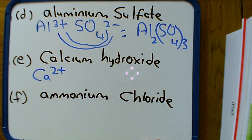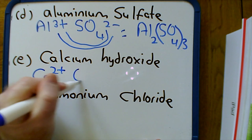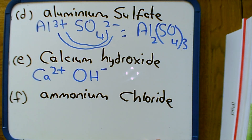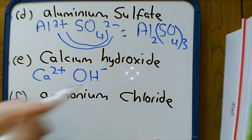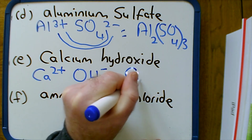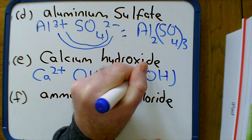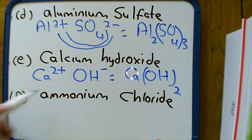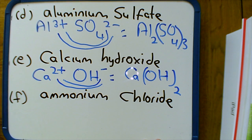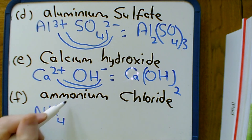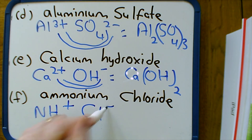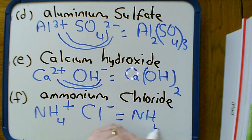For question E, calcium hydroxide: calcium is Ca2+ and the hydroxide ion is OH−. We need two OH− to cancel each calcium, so the formula is Ca(OH)2. The brackets are important because we have two OHs for every calcium. For question F, ammonium chloride: the ammonium ion is NH4+ and the chloride ion is Cl−. The same unit of charge on each — this simply cancels out — and the formula is NH4Cl.